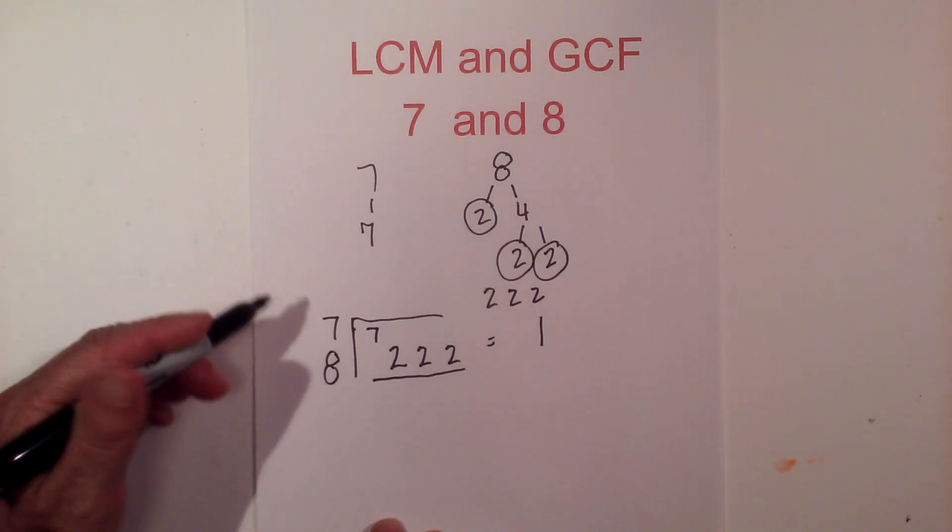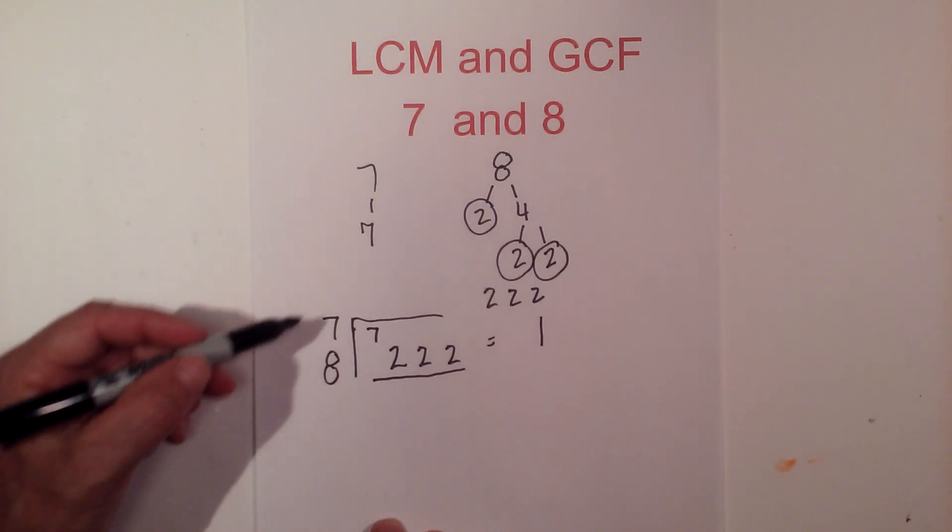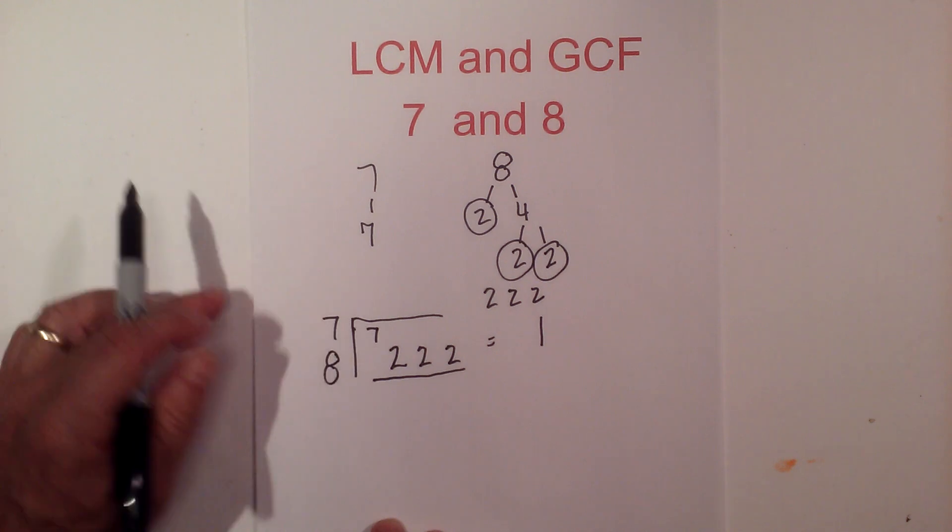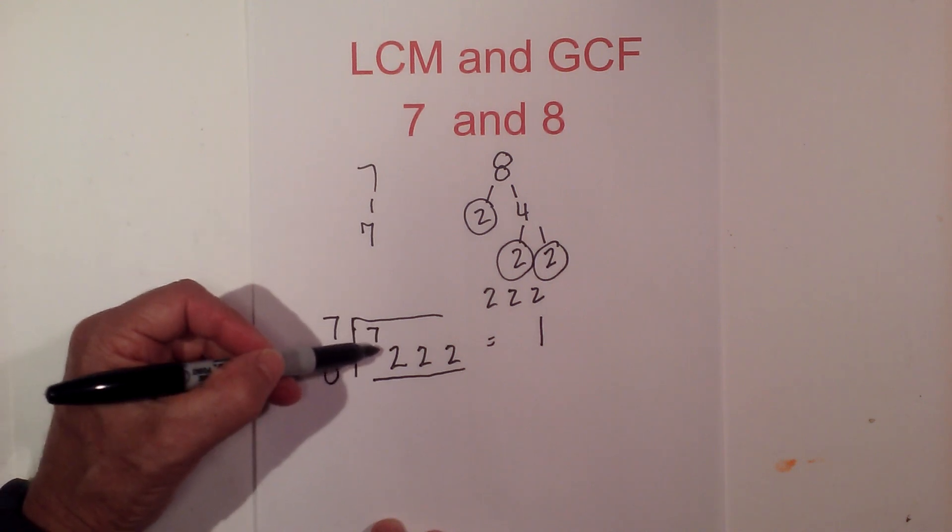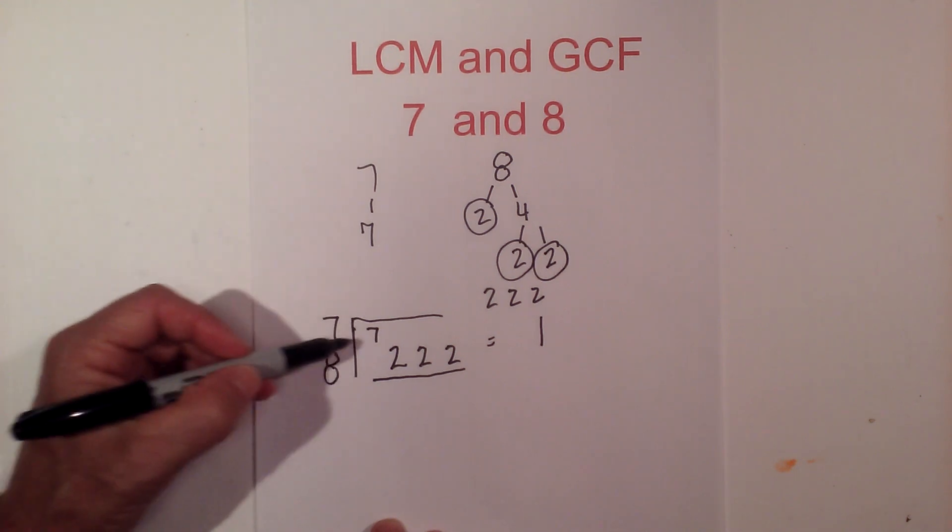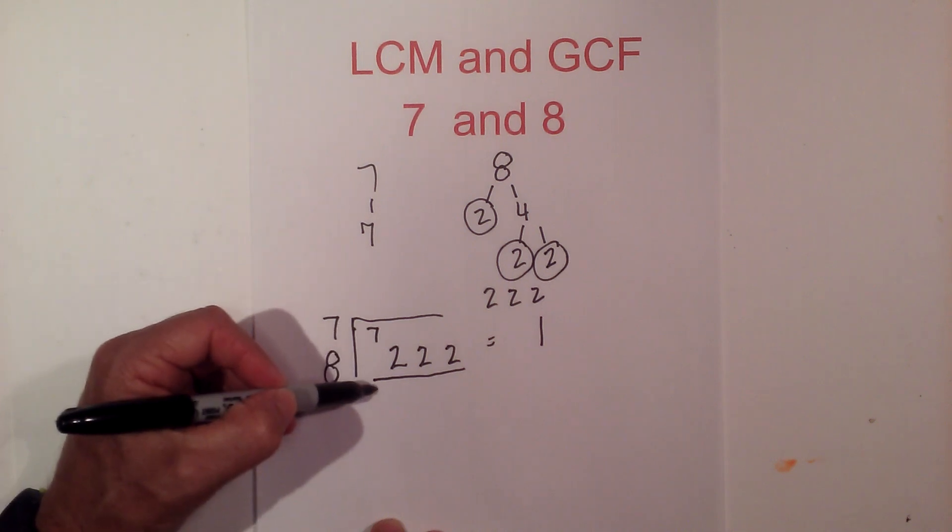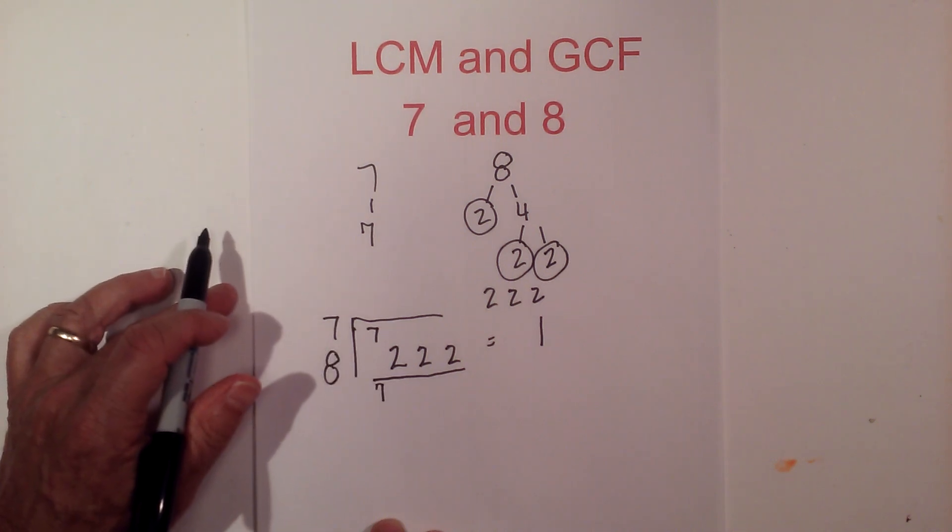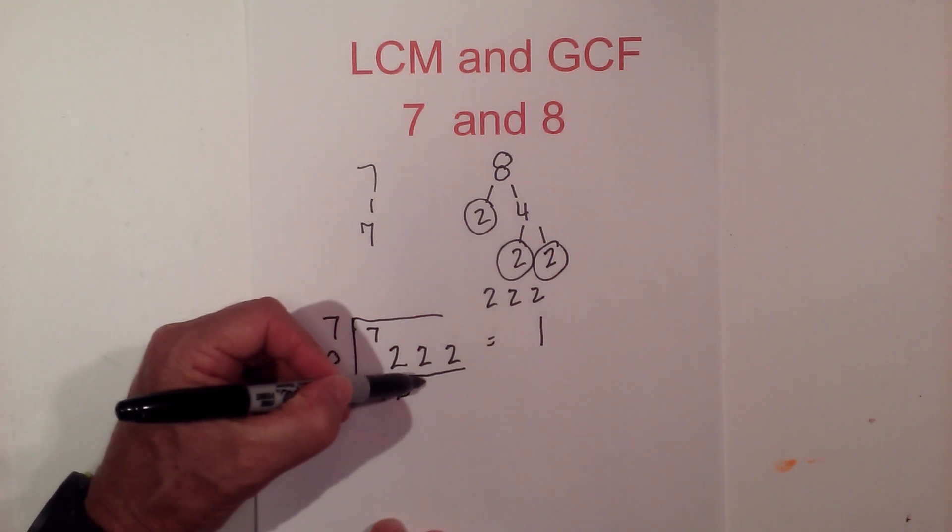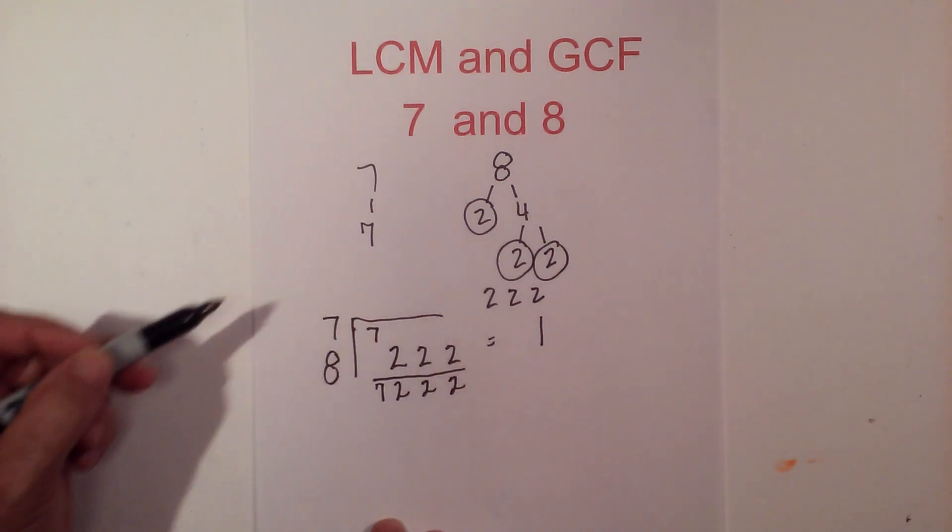Now for the lowest common multiple, what you do is you just bring down all the numbers. Now if you have a vertical pair, you only bring down one. So there's a 7, there's a 2, there's a 2, and there's a 2.